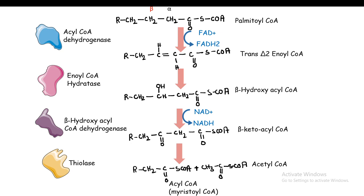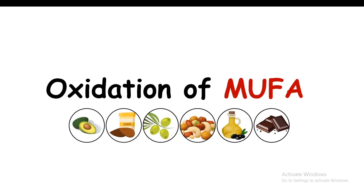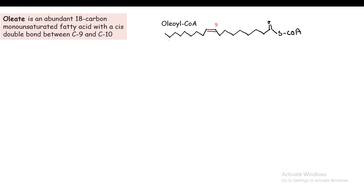Now let's look at the steps that differ for poly- and monounsaturated fatty acids. Starting with monounsaturated fatty acids — these are present in avocado, almond, olive oil, dark chocolate, and other dry fruits. Oleic acid is an abundant 18-carbon MUFA with a double bond between carbon 9 and carbon 10, depicted here in red.